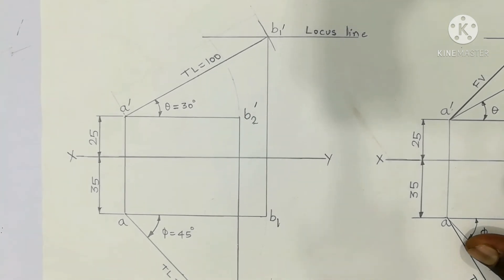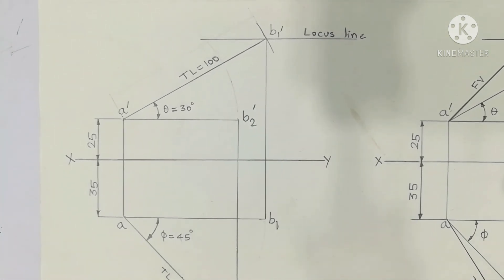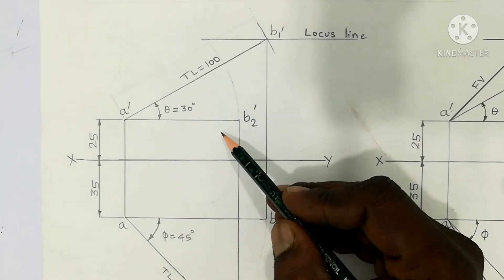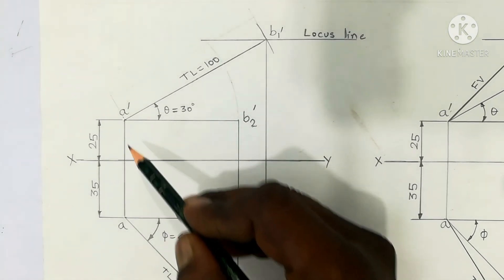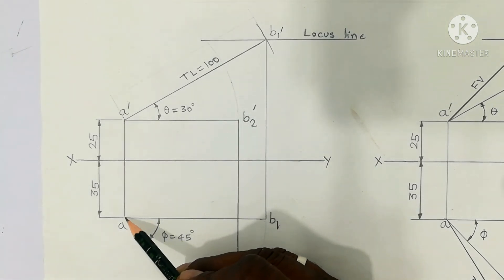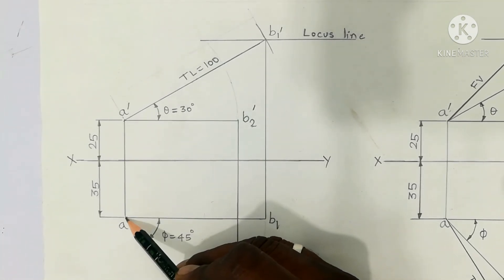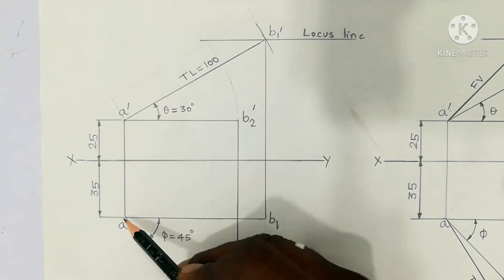The problem is solved in two steps. Given data, what is the first step? 25mm above HP, above the XY line, and 35mm in front of VP. In front of VP always comes below the XY line.